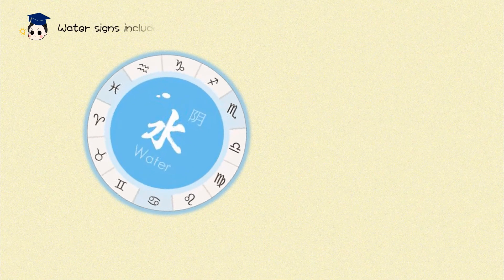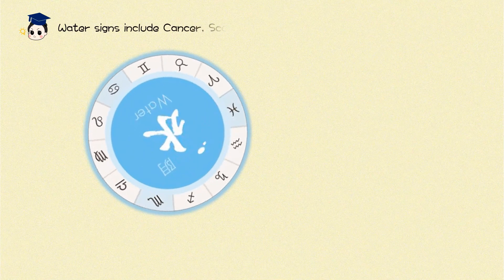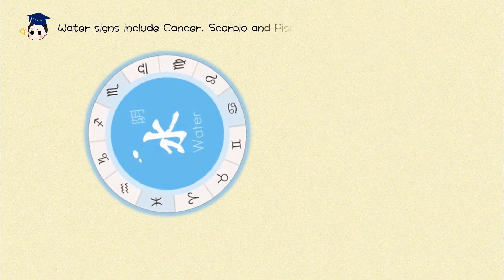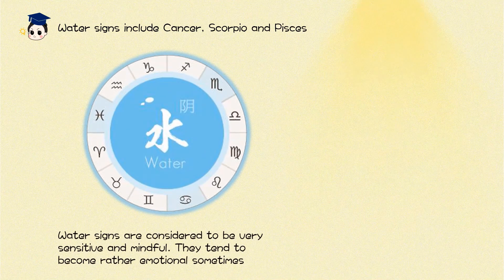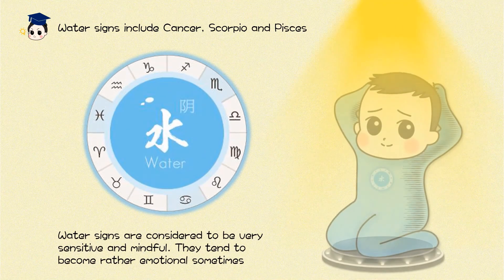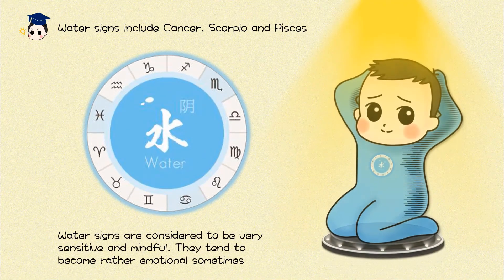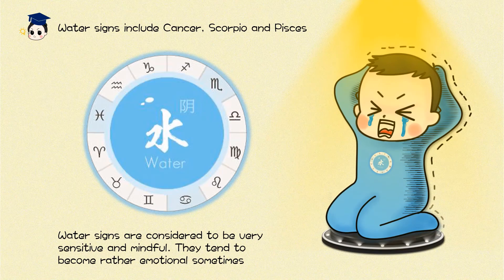Water signs include Cancer, Scorpio, and Pisces. Water signs are considered to be very sensitive and mindful. They tend to become rather emotional sometimes.